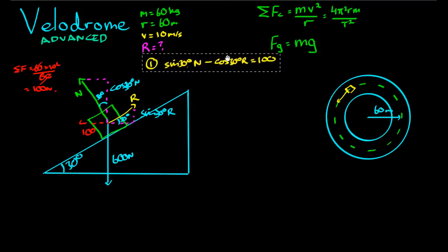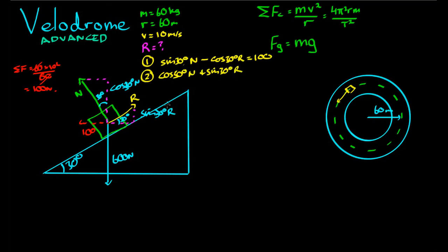So our second simultaneous equation is that cos 30 degrees N, the force acting in that direction there, plus sine 30 degrees R, that's another force acting in that direction, is equal to the force acting down there, 600. Again, we don't know R or N. If we knew one, we could solve the other, but since we have these two equations and two unknowns, we can actually solve for the variables.